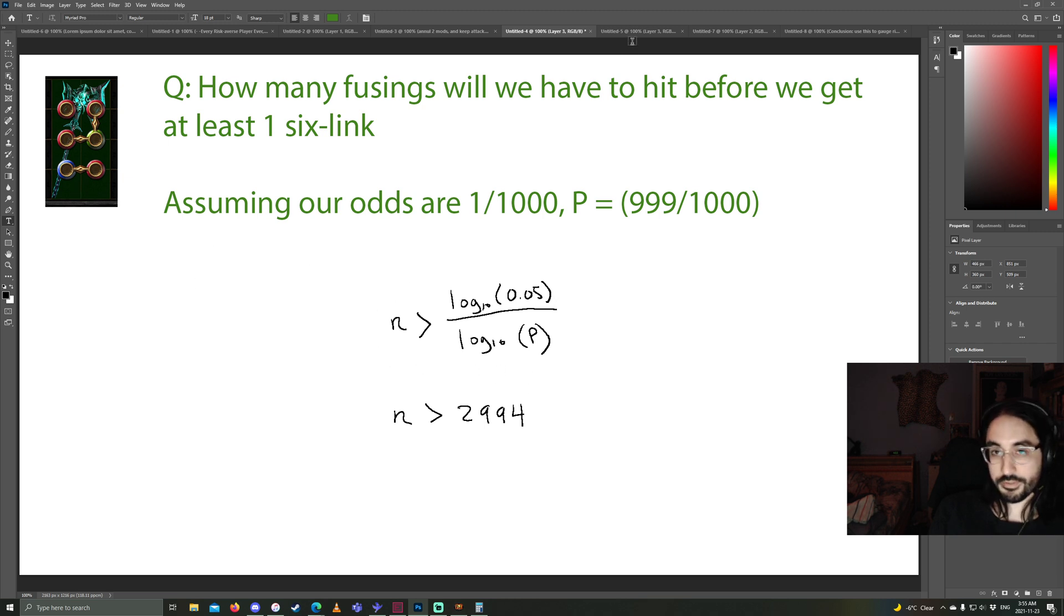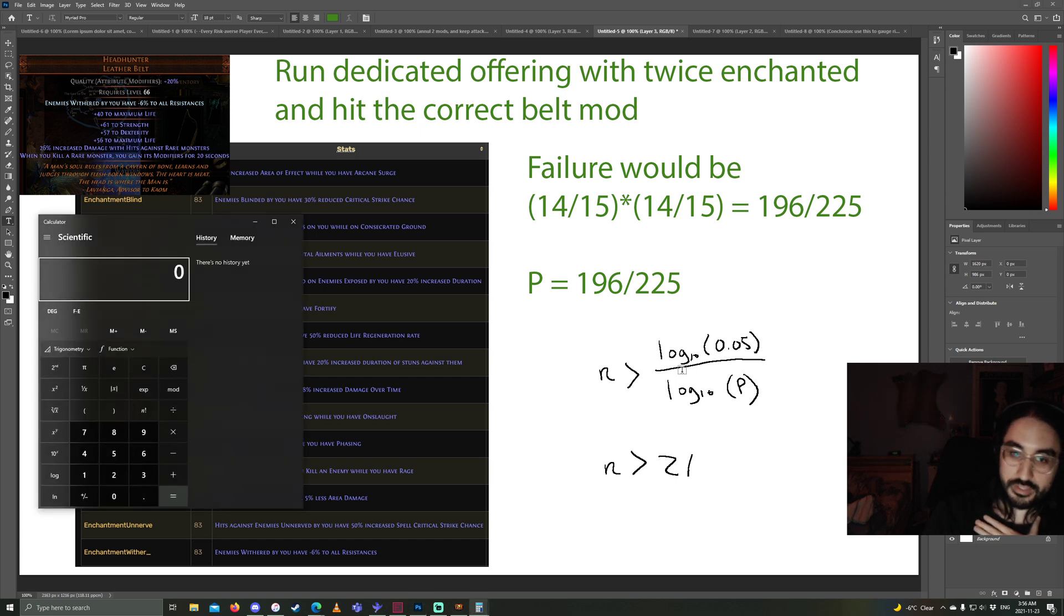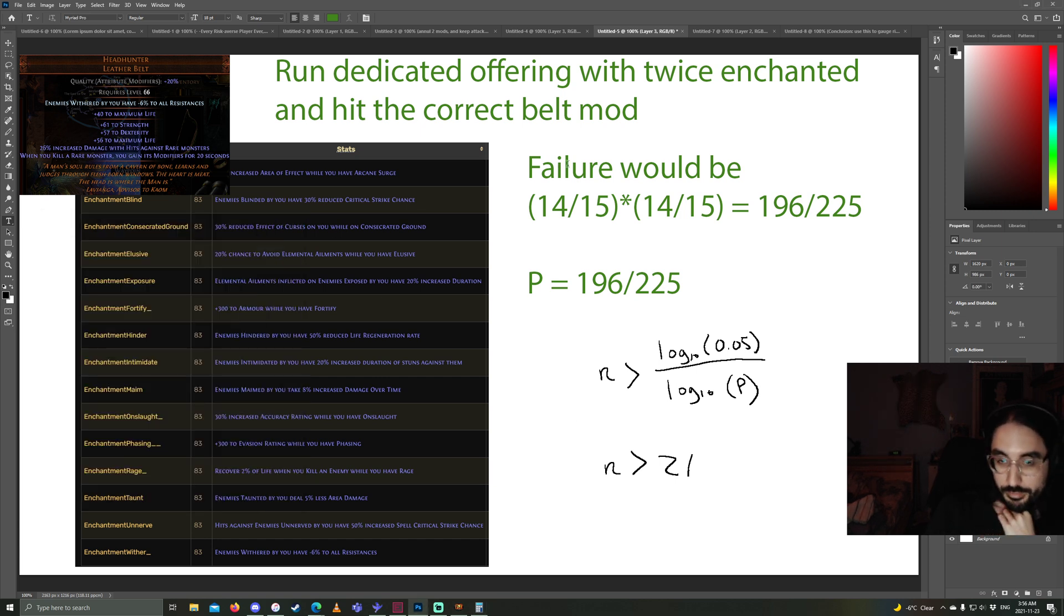So, we've applied this to 6 links. Now, let's apply it to something else. Now, this one, I calculated specifically for me, because I was running lab to try and get the implicit enemies withered by you have minus 6 all resistances on my headhunter. And I wasn't getting it. It took me like 16 lab runs to get it. And the odds are 1 in 16. But the thing was, I was using twice enchanted. So I think I used the font, the blessing font, or whatever it's called, like 32 times before I got the withered. So I wanted to see was I getting close to the crazy amount that is the threshold? So let's actually, let's go over the math first.